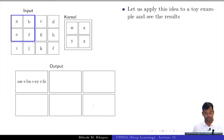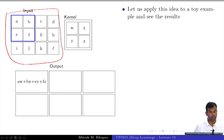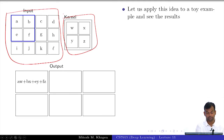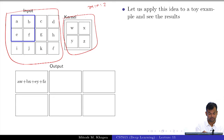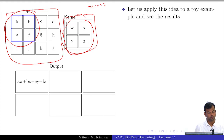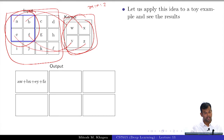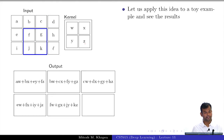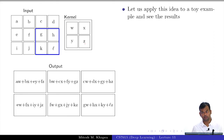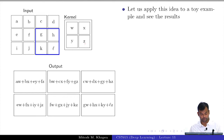Let us apply this to a toy example. I have a 2D input and a 2×2 kernel (m = n = 2). I place this kernel at one location, and the output is: a·w + b·x + e·y + f·z. I keep sliding the kernel to get all other output entries. Notice that the output size has reduced compared to the input — we will come back to this more formally later.